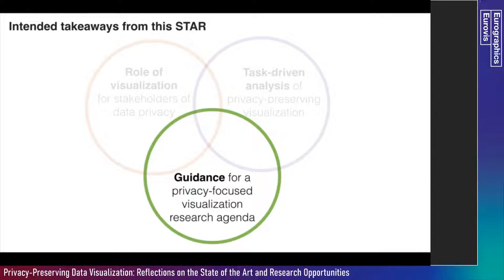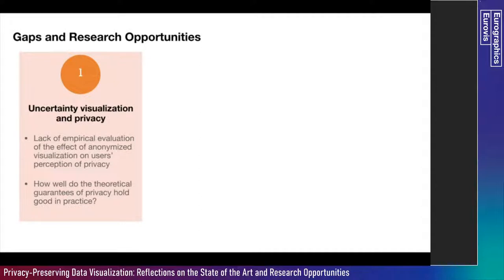One of our first findings is that there is a complete lack of empirical evaluation about people's perception of privacy — to understand how well anonymization algorithms hold up in practice. What we want to achieve is to make data as uncertain as possible so people are not able to break through privacy barriers. We can apply concepts and methodologies from uncertainty perception and communication to understand both how well people understand privacy and how well the theoretical guarantees of privacy for anonymization algorithms hold good in practice.